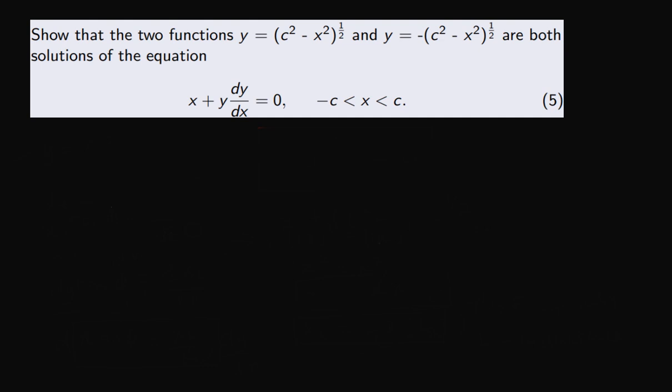Let's try our hands on this example. The question says that the two functions y equals c squared minus x squared, all in brackets to the power half, and y equals minus bracket c squared minus x squared to the power half, are both solutions to the given differential equation. To prove this, we'll start with the first function, so we have y equal to c squared minus x squared to the power one over two.